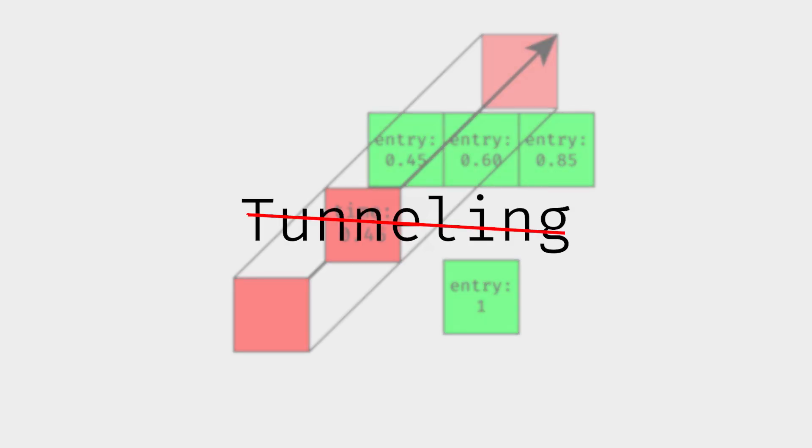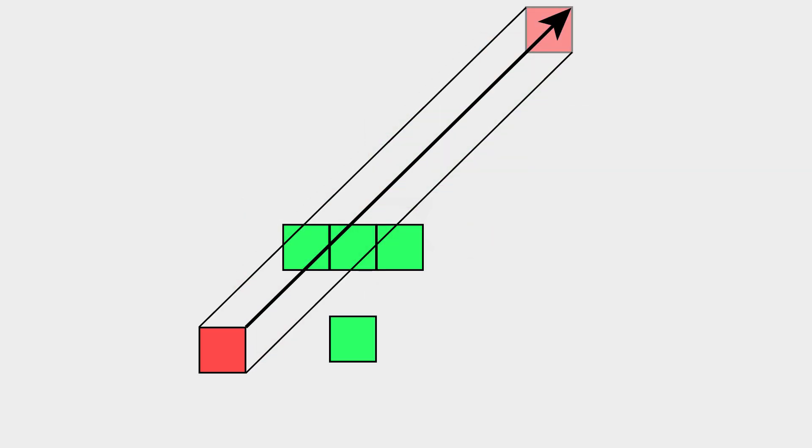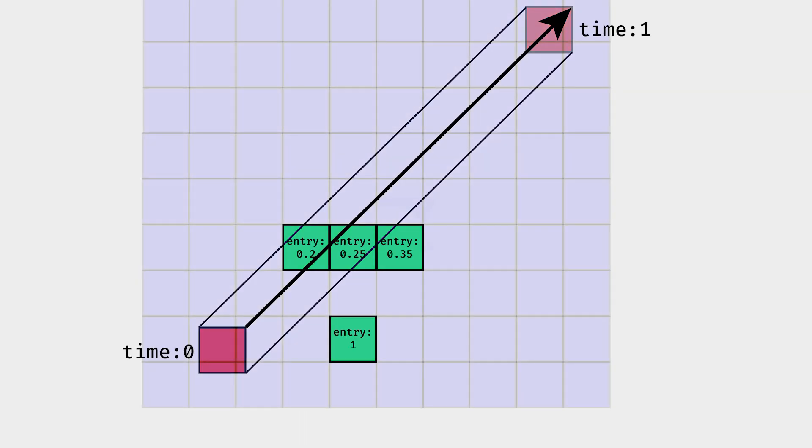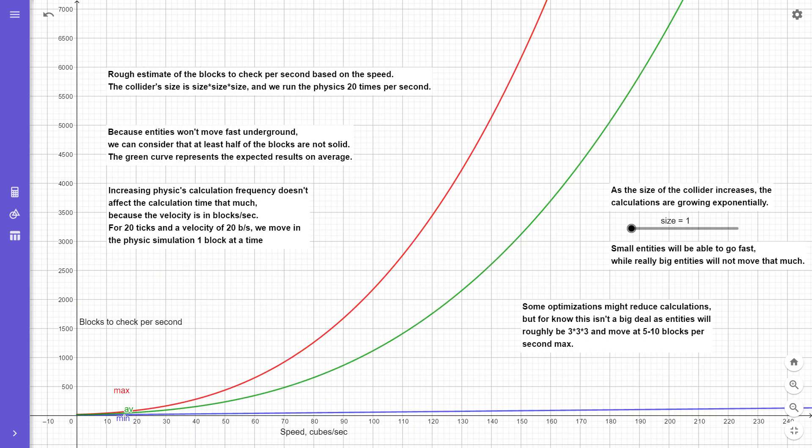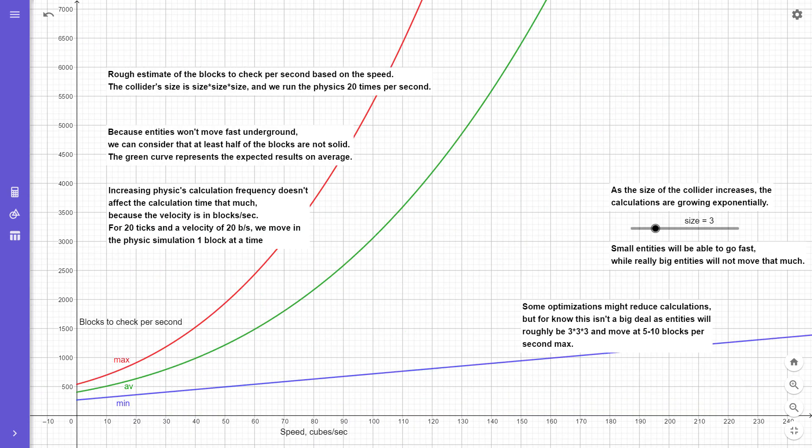This totally removes tunneling, because even if the velocity is super high, we will always check every possible voxel and keep track of the minimum entry time. Basically, going faster only increases calculation time. However, we are not finished yet.